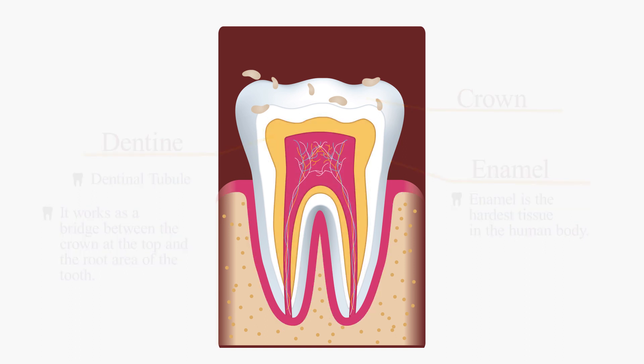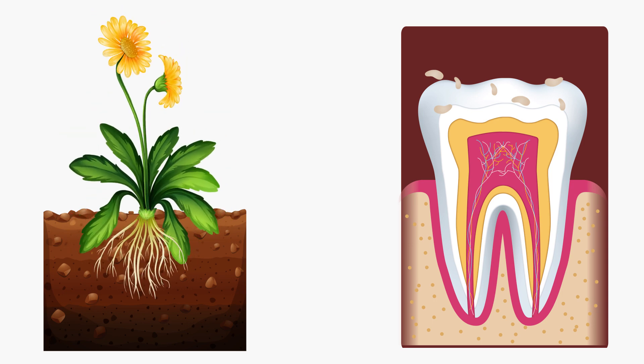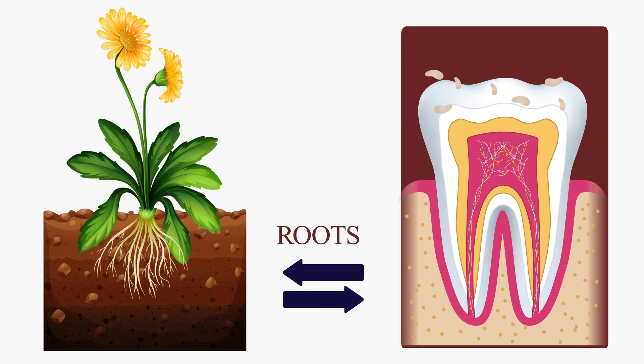Just like plant roots, our teeth also have roots. Roots help in anchoring the tooth firmly in the sockets of the gums.